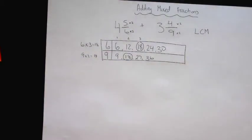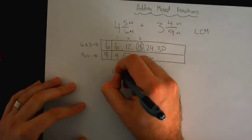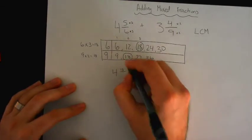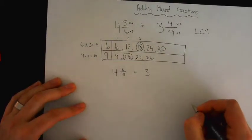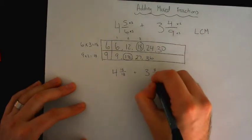So I'm going to rewrite this question. Anisha, you will see now why I'm not converting this to improper fractions. Keep the 4. So now 5 times 3 is 15. And 6 times 3 is 18. Plus 3 stays the same. 4 times 2 is 8. 9 times 2 is 18.